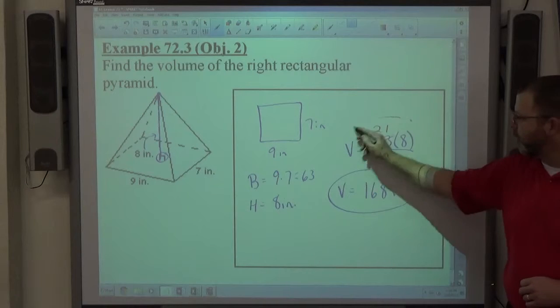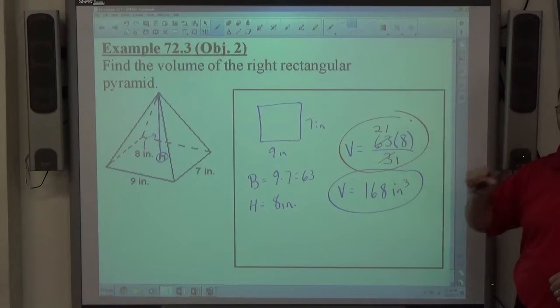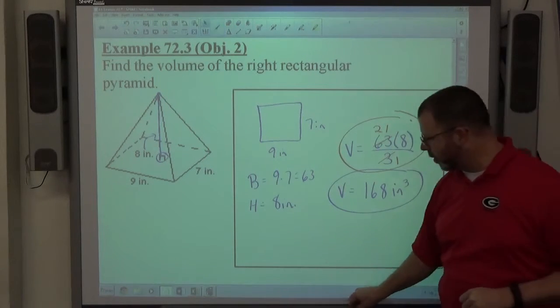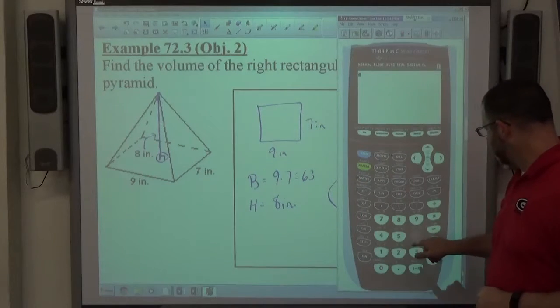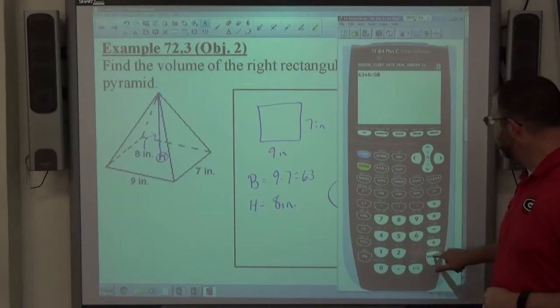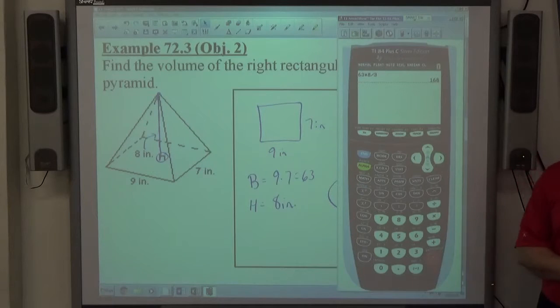But again, if you get to this point here, you just want to type in 63 times 8 divided by 3 equals on the calculator. That's what would end up happening. 63 times 8 divided by 3 equals. So that works also.